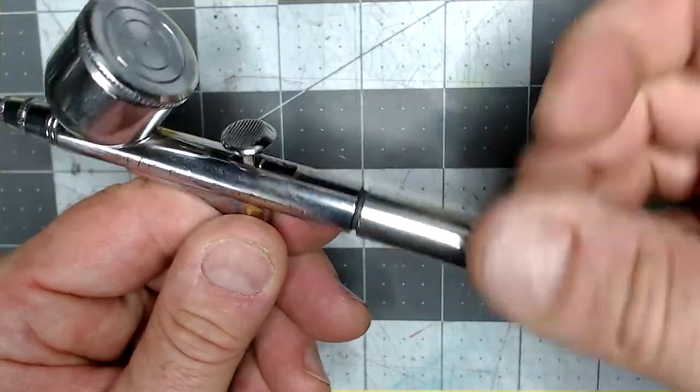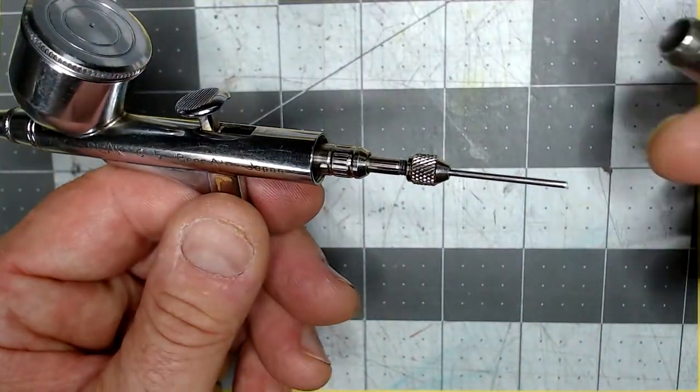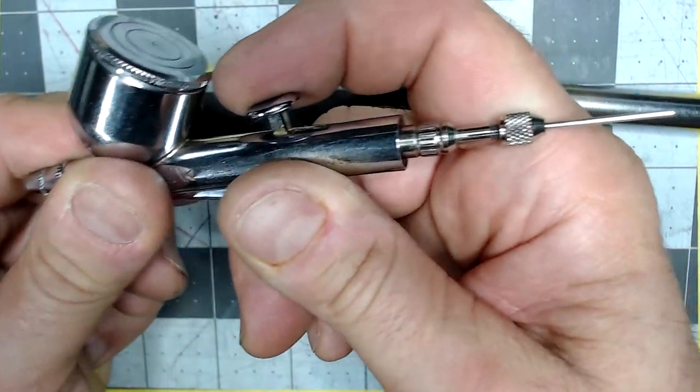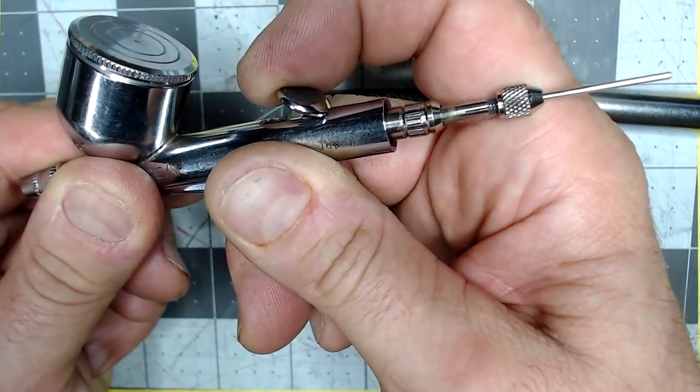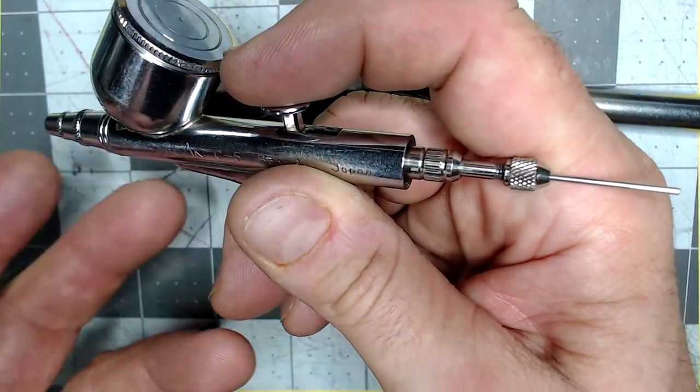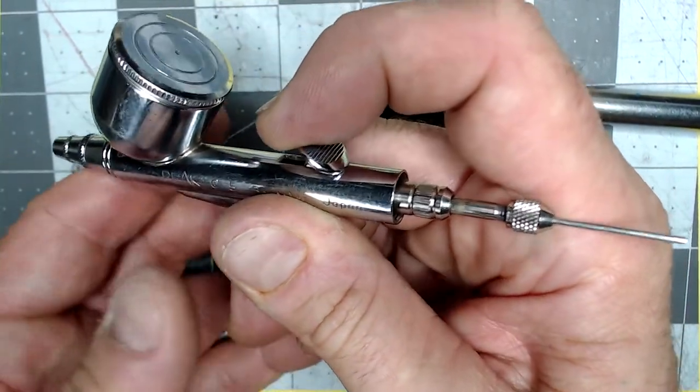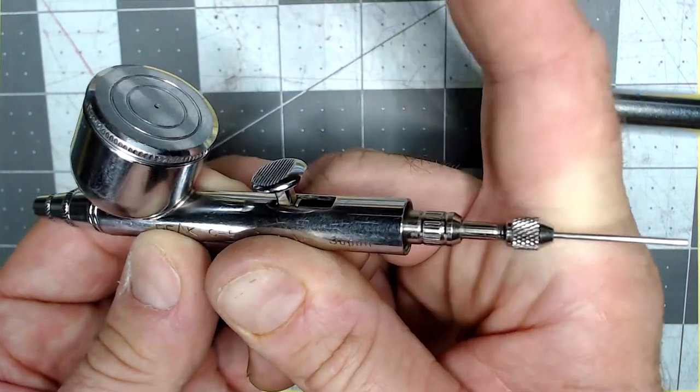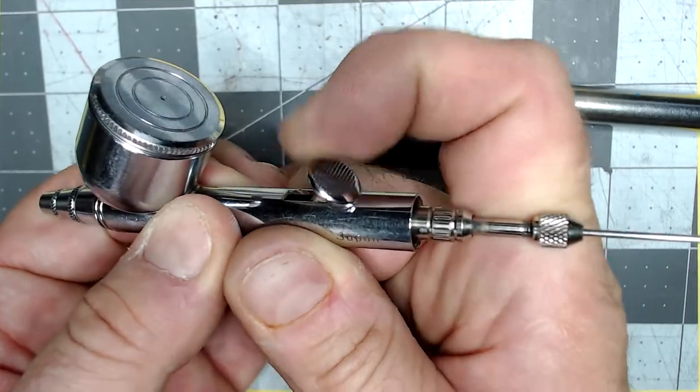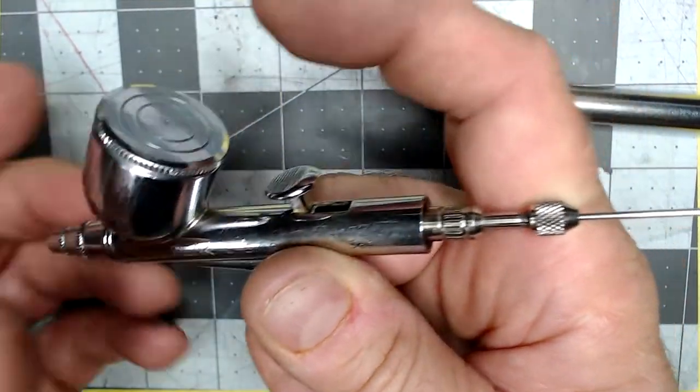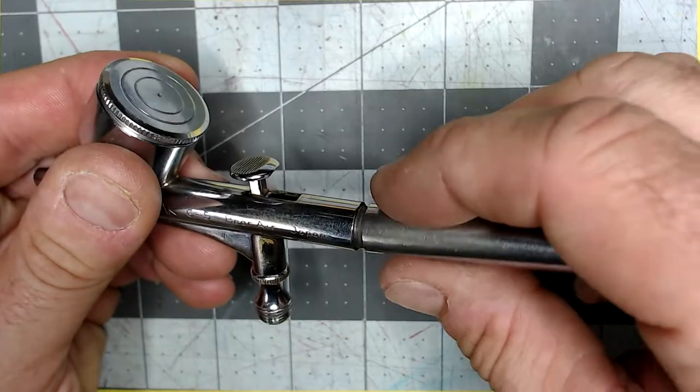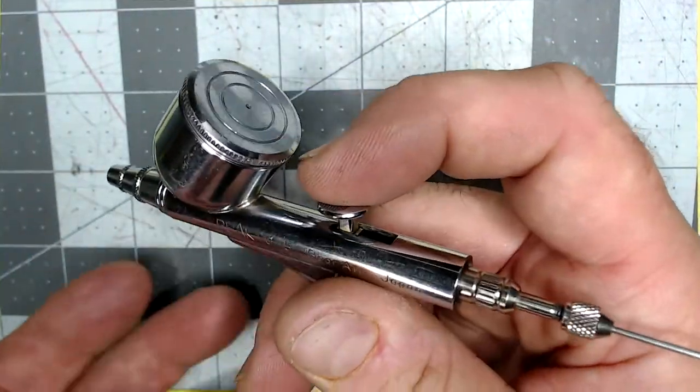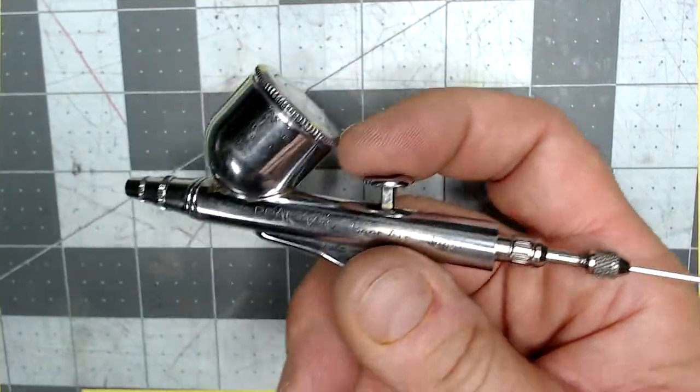Let's get started taking this thing apart. Now, the handle is a basic handle. Its main function is to keep your hand from interrupting the action of the brush here when you pull the trigger back. It's possible, if you're not paying attention, that you pull the trigger back and let go, and your hand is still holding on to the needle. And now you've just sprayed paint where you don't want it to.